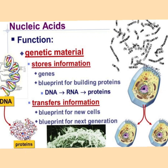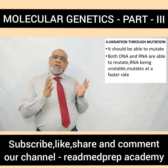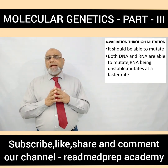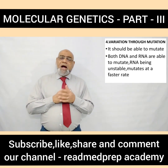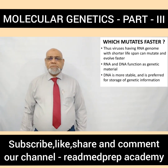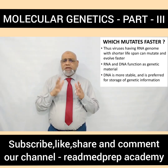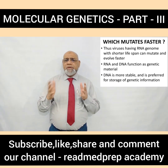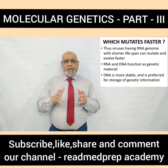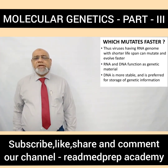The genetic material should also undergo mutation — it should be able to mutate. Both DNA and RNA are able to mutate. RNA, being unstable, mutates at a faster rate. Viruses having an RNA genome with a shorter life span can mutate and evolve faster. DNA is more stable and is preferred for storage of genetic information.